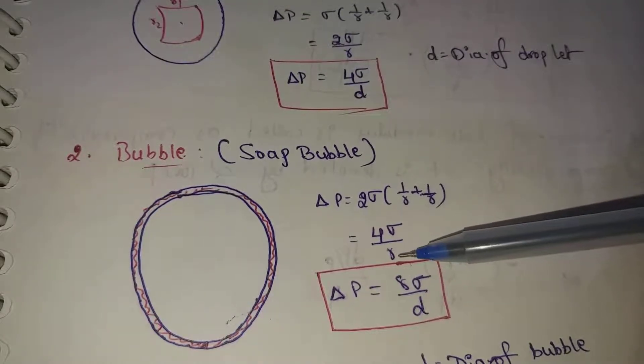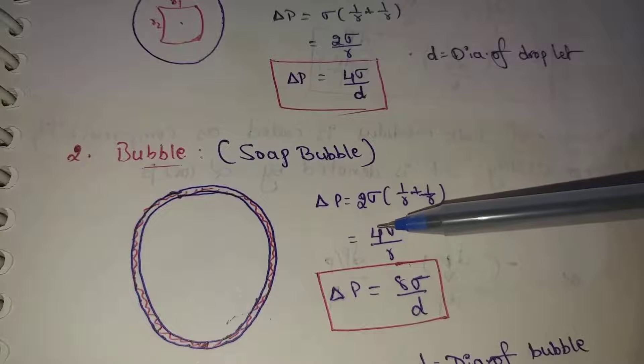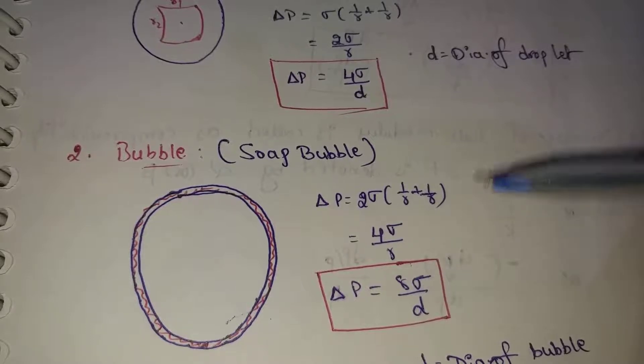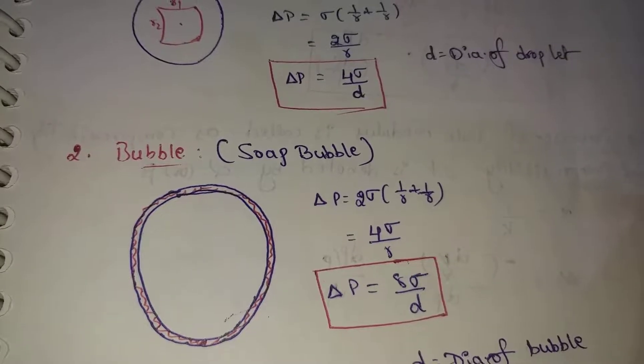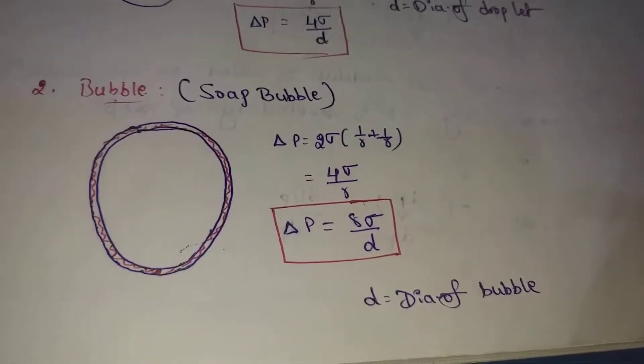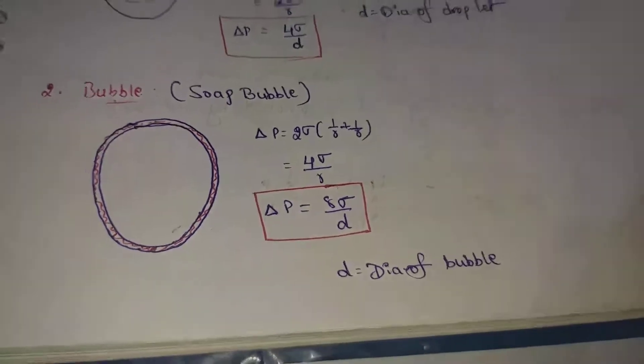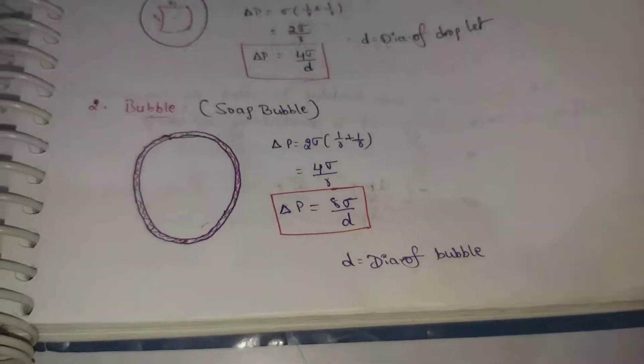R equals D by 2. So 4 into 2 equals 8. Therefore, Delta P equals 8 sigma by D, where D is the diameter of the bubble. This applies to the soap bubble and air bubble.